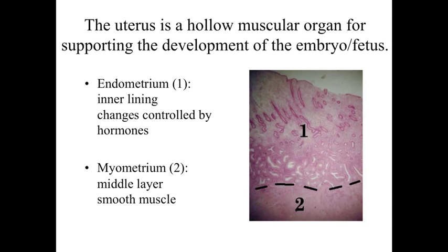Ultimately the egg is delivered into the uterus, which is a hollow muscular organ for supporting the development of the embryo and fetus. Looking at it, we're going to have an endometrium — the inner lining — which undergoes very dramatic cyclical changes corresponding to what's going on within the ovary, controlled by hormones. Then we have a deeper smooth muscle cell layer, the myometrium, which is able to undergo changes during pregnancy.